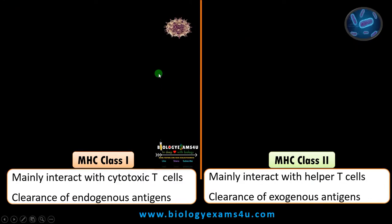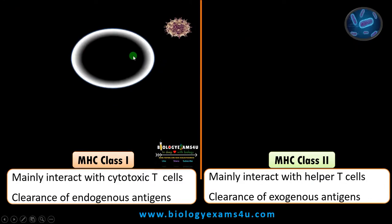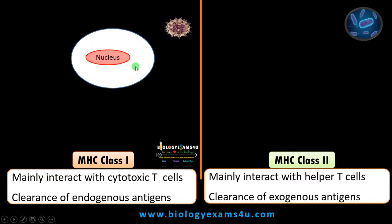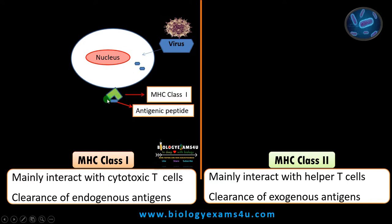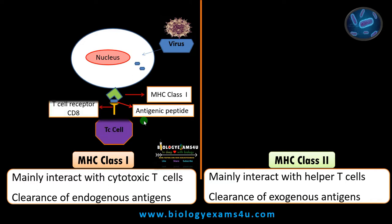Moving to the interaction of MHC class 1 with other cells. If a virus infects a nucleated cell, the virus is internalized and processed — this is called antigen processing. A part of the virus is then presented on MHC class 1 receptor, and this MHC class 1 bound antigenic peptide is recognized by cytotoxic T cells, which carry the CD8 receptor.